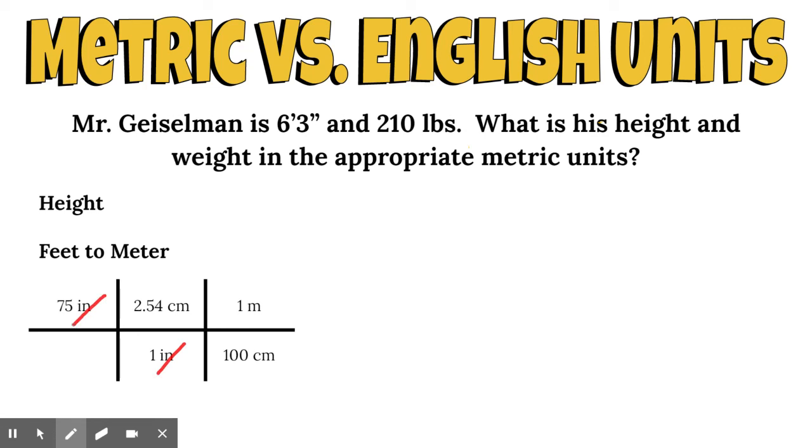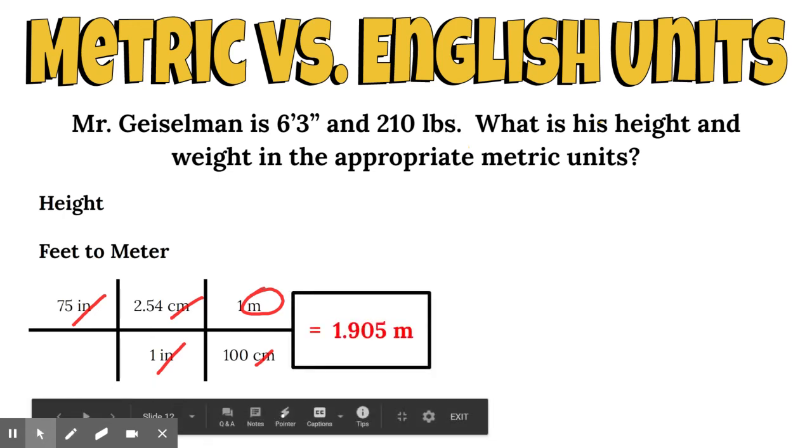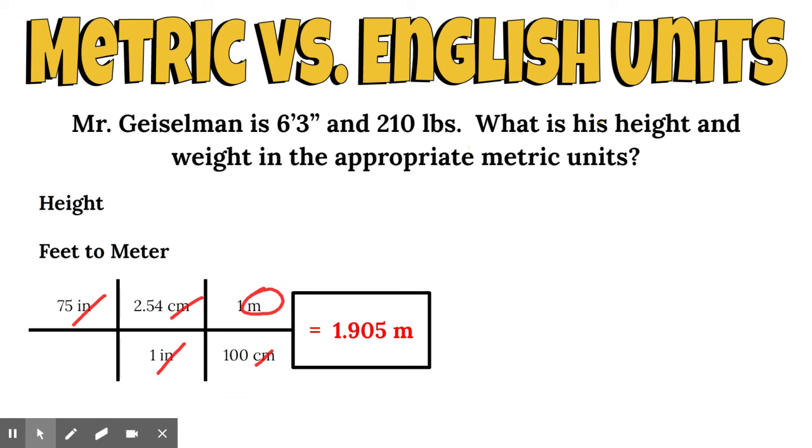I would take the things on top and multiply them together. 75 times 2.5 times one, and that leaves me with my unit of meters divided by one times 100. Those units cancel out and I get my new units. I get a height of about 1.905 meters. The distance from the top of my head to the bottom of my feet is 1.905 meters.